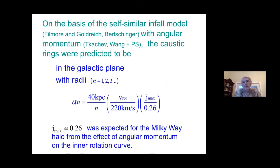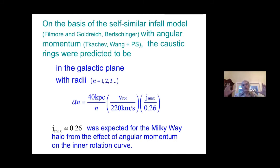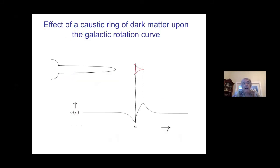Working with Tkachev and Yun Wang on the basis of self-similarity, we predicted where these caustics are — specifically where particles approach their smallest radius. The caustics are in the galactic plane with radii of order 40 kpc divided by n in our galaxy: so 40, 20, 13.3, 8 kiloparsecs and so forth. When you place a caustic ring in the disk of a galaxy, the rotation curve gets perturbed by the presence of the caustic ring and shows kinks.